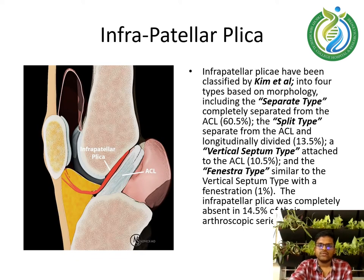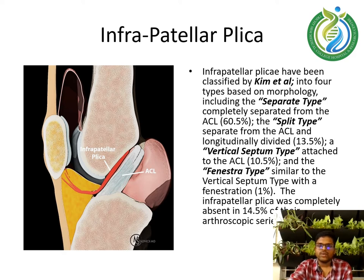Infrapatellar plicae have been classified by Kim et al. into 4 types based on morphology: the separate type, completely separated from the ACL, accounting for 60.5%; the split type, separate from the ACL and longitudinally divided, accounting for 13.5%; the vertical septum type, attached to the ACL, accounting for 10.5%; and the fenestral type, similar to the vertical septum type with a fenestration. The infrapatellar plicae was completely absent in 14.5% of their arthroscopic series.